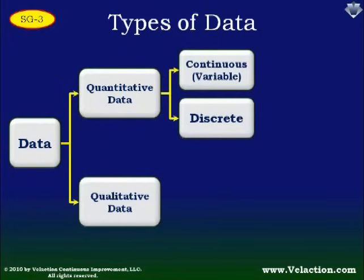Continuous data would be when you say how tall is a person — it can be any number along a scale. Obviously you're not going to have a 40-foot tall person, but anywhere within that range, it could be any of an infinite number of decimals. You can have anywhere along a sliding scale that you're not fixed in the way you can choose.